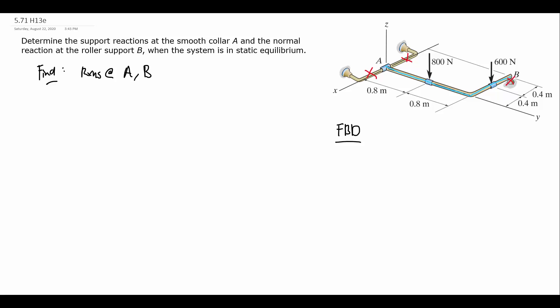I'm going to use the given coordinate system. A is going to be the origin of this system, and then it's going to go along the negative X axis to B. So that is the object I want to keep.